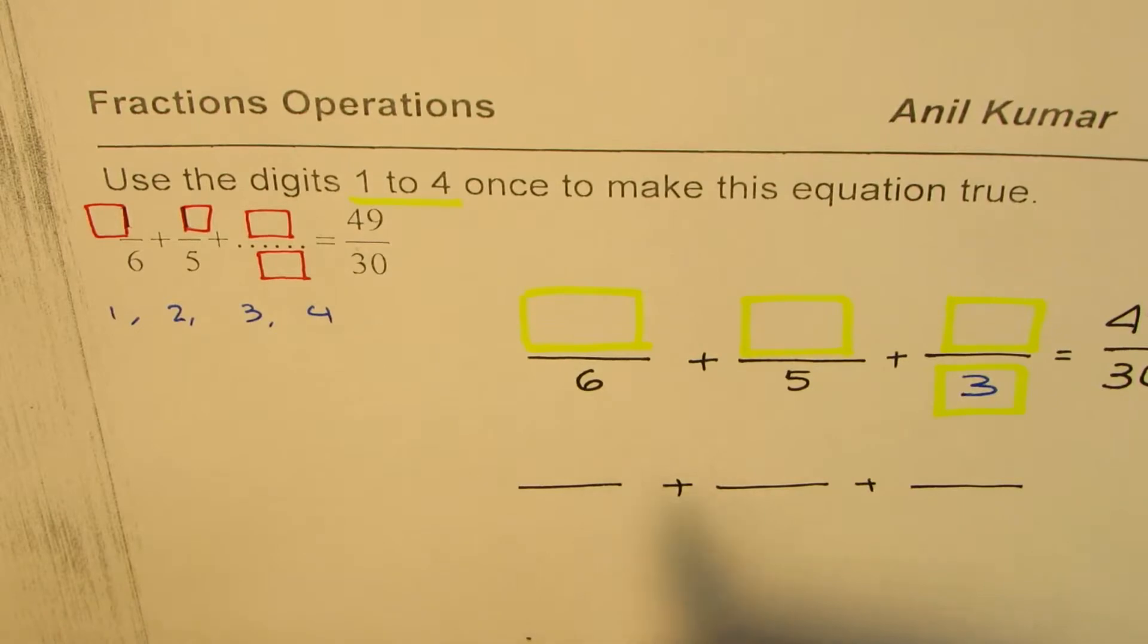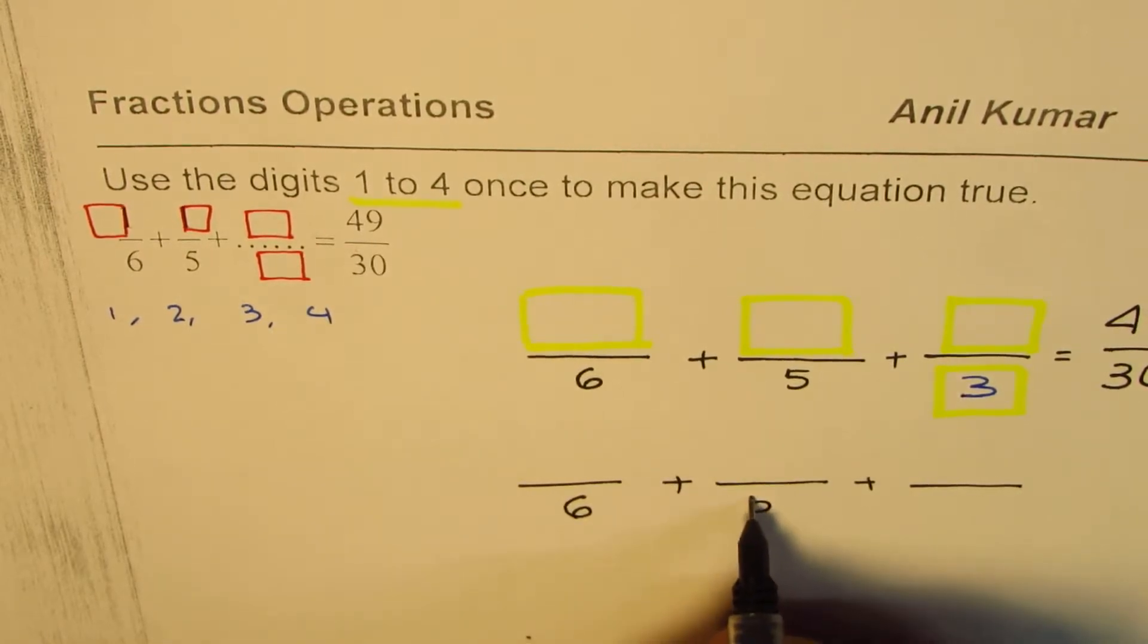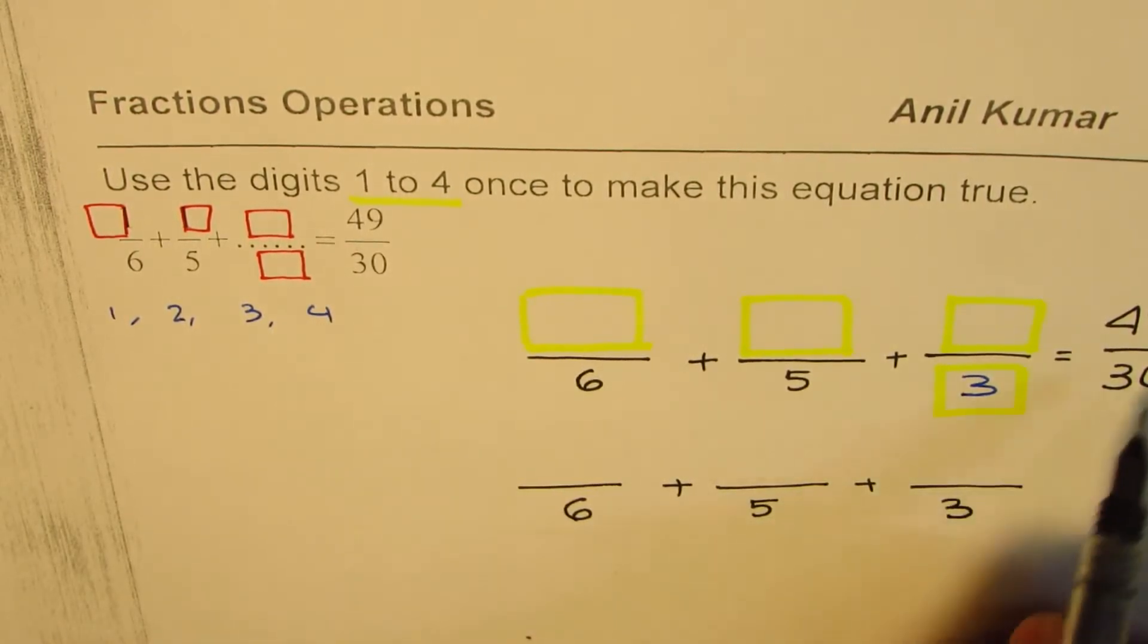What I will do here is I will rewrite the given expression and then I will show you my strategy. So what we have here for the time being is we are taking this as 6 as given to us, 5 and 3.